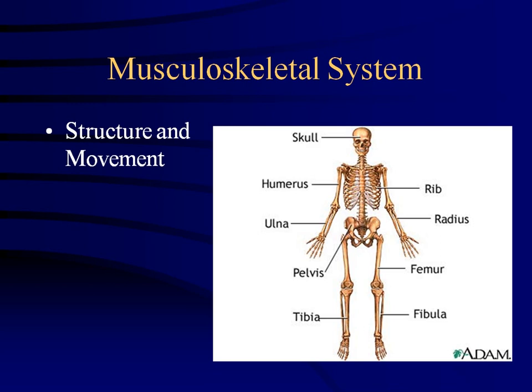The musculoskeletal system provides structure and movement. Without the skeletal system, you'd basically just be a blob. The muscles provide movement; the bones provide structure. Bones also have other functions — you can actually start IVs in them. It's called an intraosseous line — you drill into the bone to access circulation.